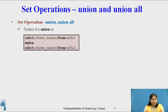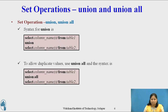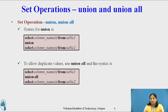The syntax for Union is: SELECT COLUMN_NAME FROM TABLE1 UNION SELECT COLUMN_NAME FROM TABLE1. The syntax for Union All is: SELECT COLUMN_NAME FROM TABLE1 UNION ALL SELECT COLUMN_NAME FROM TABLE2. The column names in the result set are usually equal to the column names in the first SELECT statement in the Union and Union All.